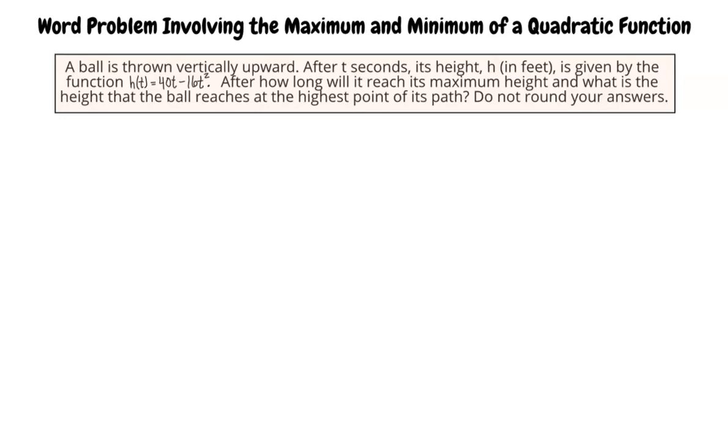A ball is thrown vertically upward. After t seconds, its height, h, in feet, is given by the function h equals 40t minus 16t squared. After how long will it reach its maximum height, and what is the height that the ball reaches at the highest point of its path? Do not round your answers.